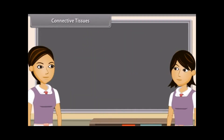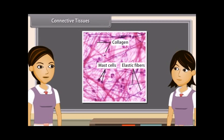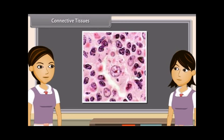Connective tissues bind different organs and parts of various organs together. The cells of connective tissues are living, separated from each other and very few in numbers. Gel-like intercellular substance called matrix forms the main bulk of the connective tissue. Matrix is fibrous in nature and binds other tissues.